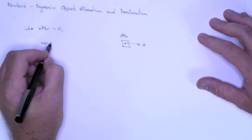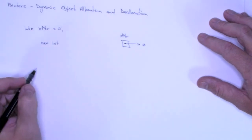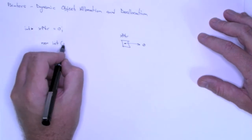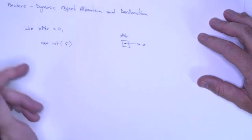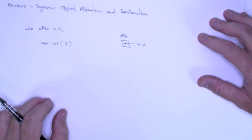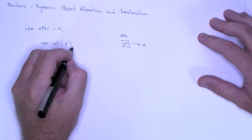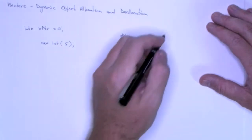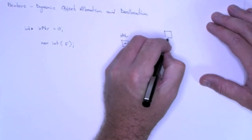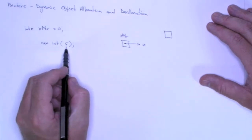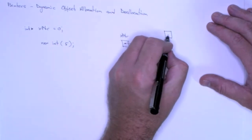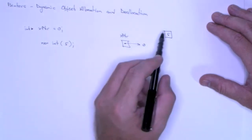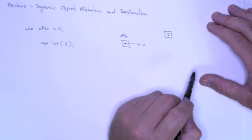And the new operator takes some type, in this case we're going to create an integer. And we can give it an initial value by specifying that value in parentheses. So what this is going to do, what the new operator is going to do is it's going to go out into memory and allocate space for an integer. It's going to store in that location the value 5. And then it is going to return the address of that object in memory.